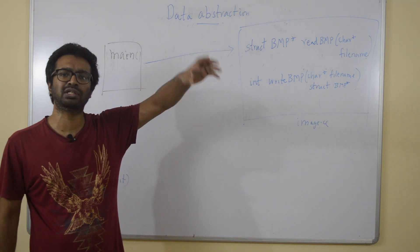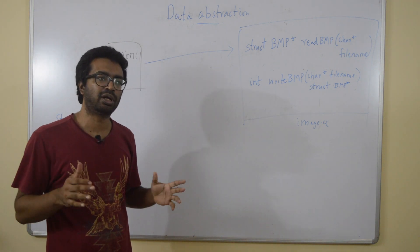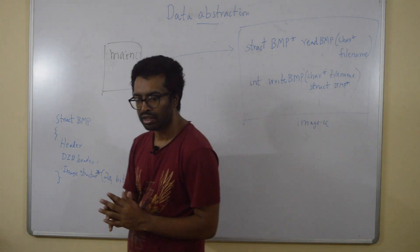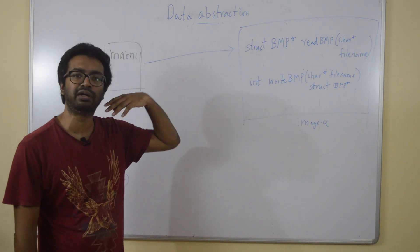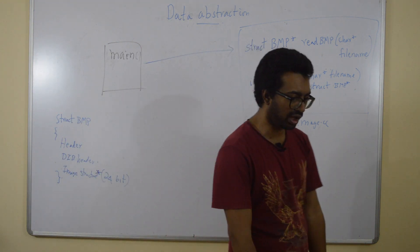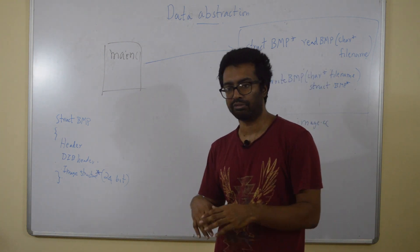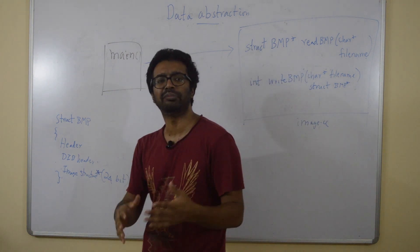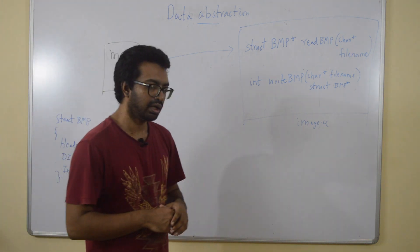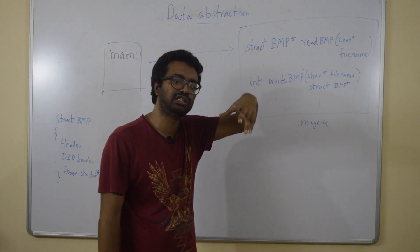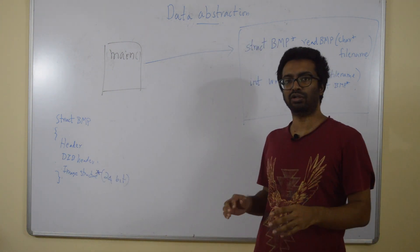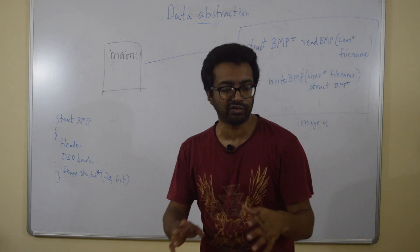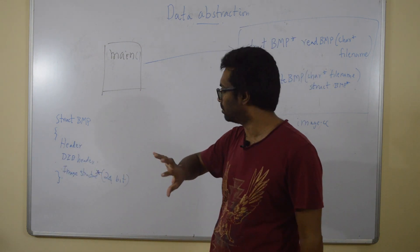Not all BMP files store a pixel in 24 bits — some store pixel information in 16 bits, some in 32 bits, etc. If I want to modify the readBMP function to also read 16-bit and 32-bit images, it can't return a struct BMP because that struct BMP only stores a 24-bit image structure.